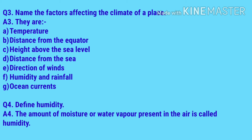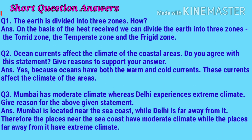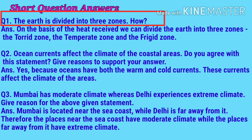Now we'll do short question answers. Question number one: the earth is divided into three zones — how? On the basis of the heat received, we can divide the earth into three zones: the torrid zone, the temperate zone, and the frigid zone.